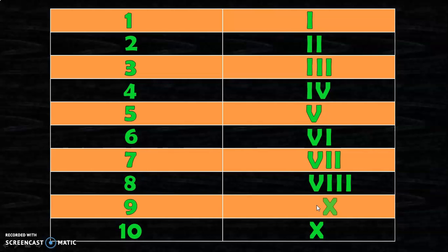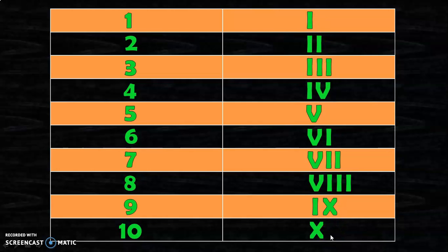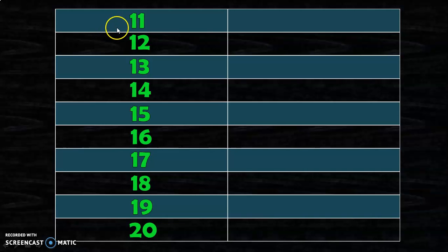For 9, we know X represents 10. When you put I before X, it means 10 minus 1 equals 9, so IX represents 9. It is very important for children to know these Roman numerals from 1 to 10 by heart, because this forms the foundation to build the remaining numbers. Now that we have learned 1 to 10, let us write Roman numerals for numbers 11 to 20.